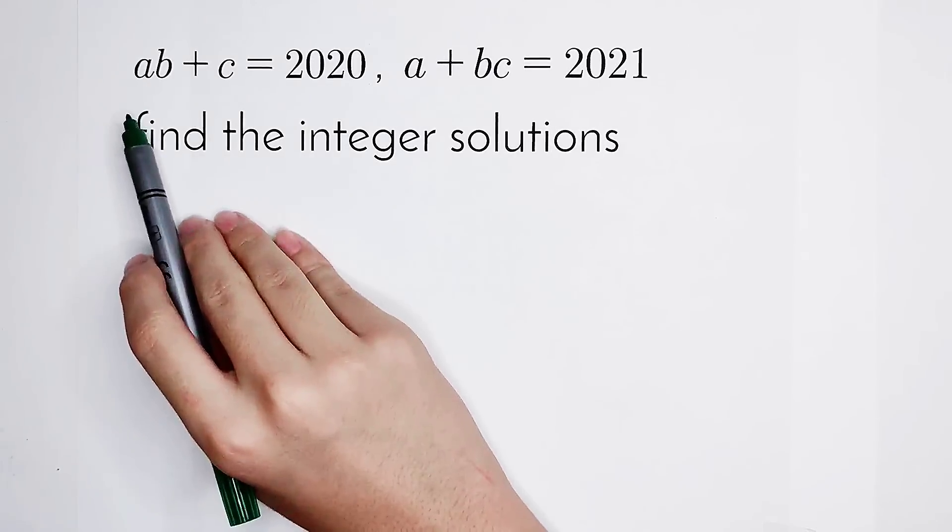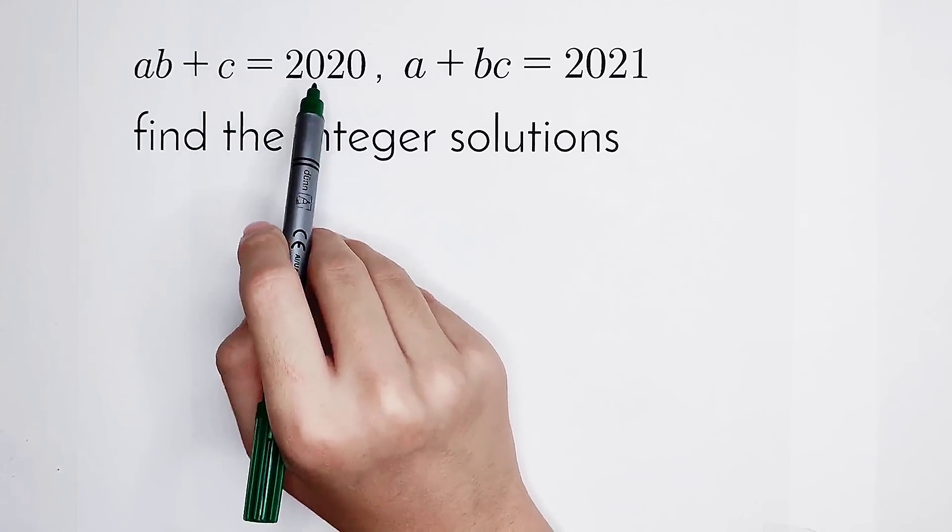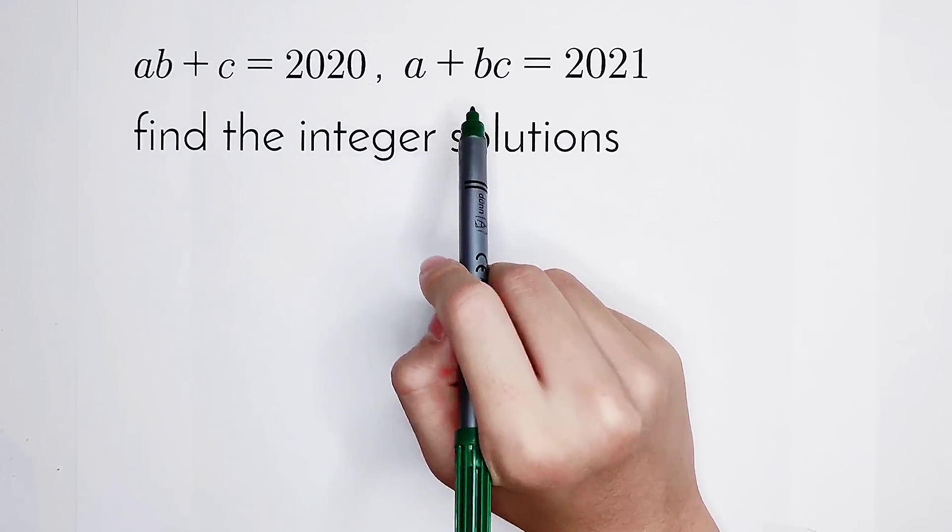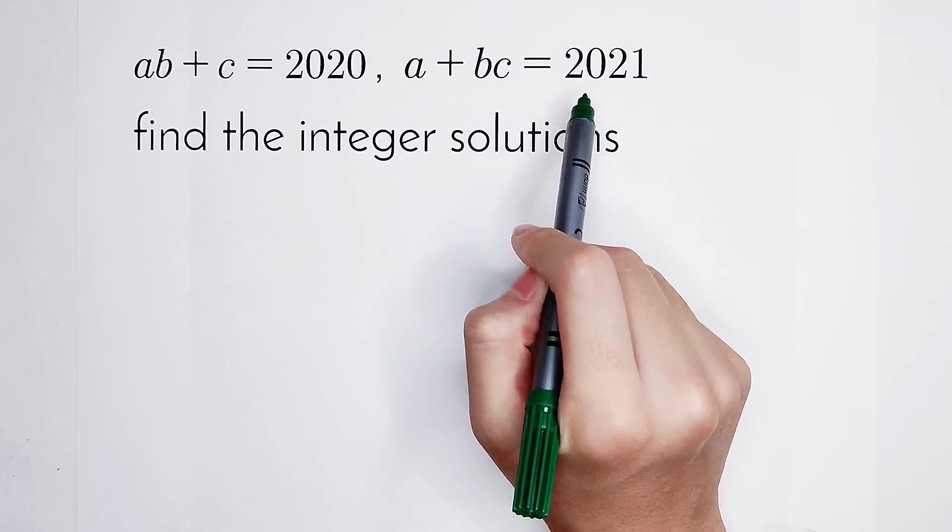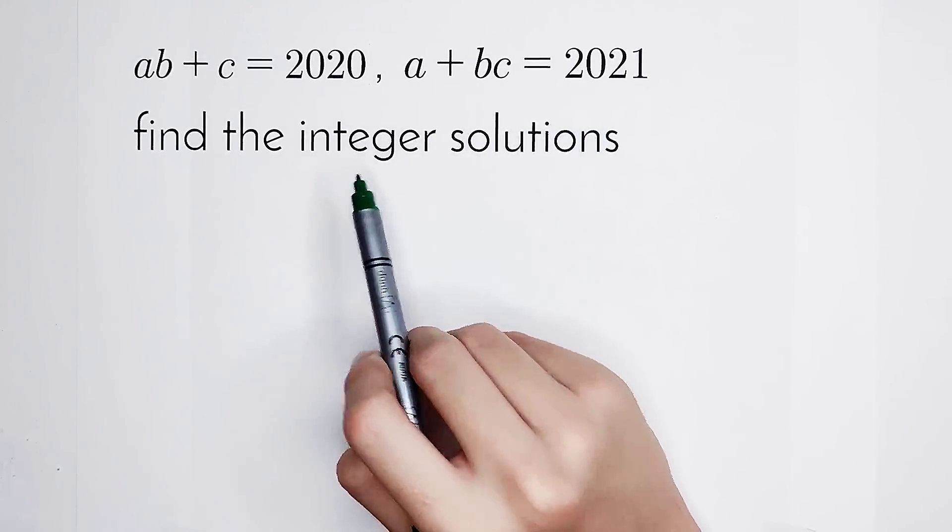Welcome to MathWinno. AB plus C is equal to 2020. A plus B times C is equal to 2021. And we have to find the integer solutions.